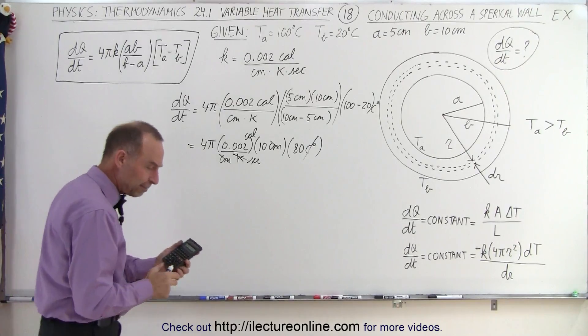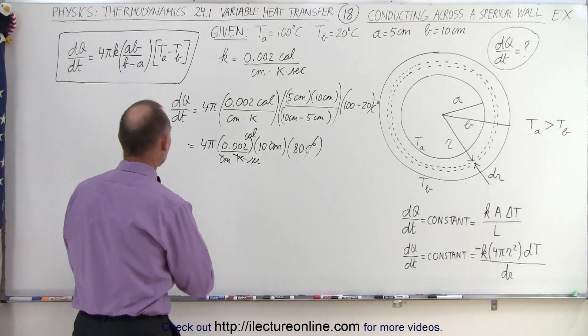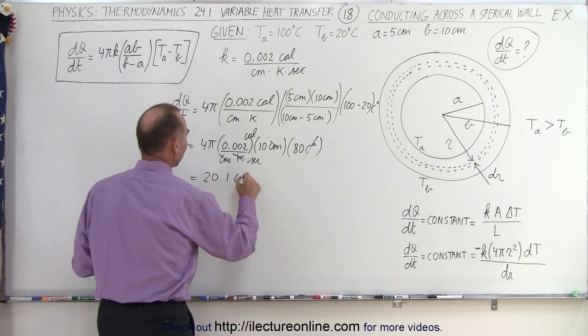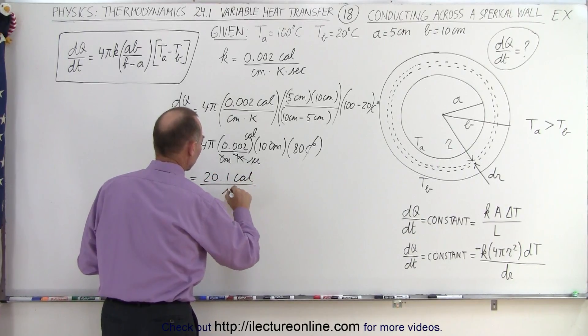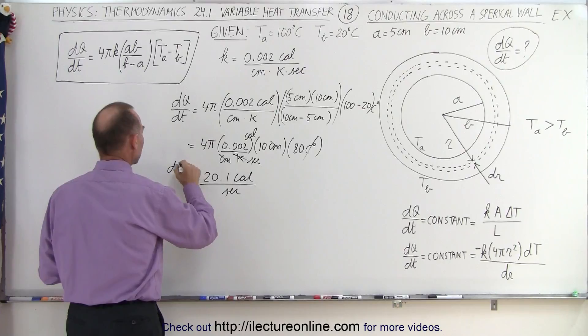And that gives us 20.1 as a result. So this is equal to 20.1 calories per second. So that's equal to the dQ/dt.